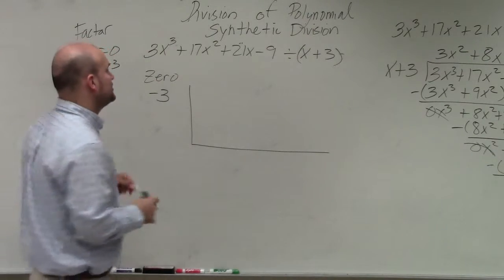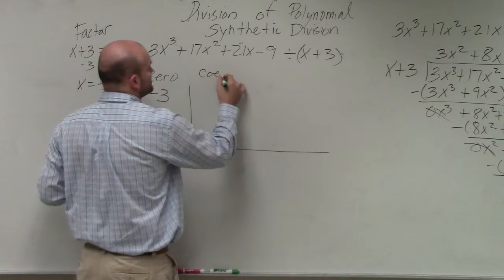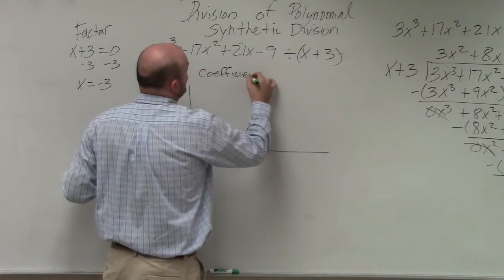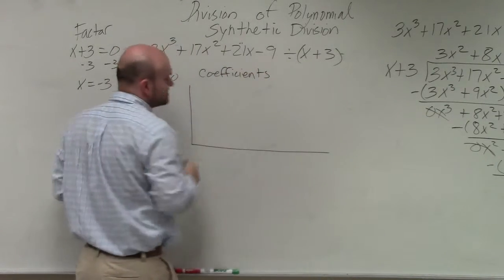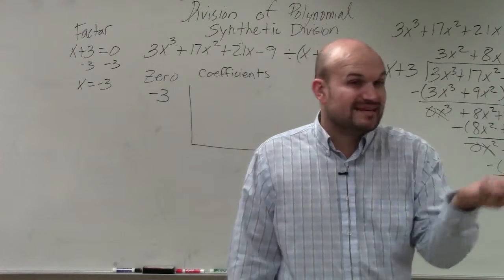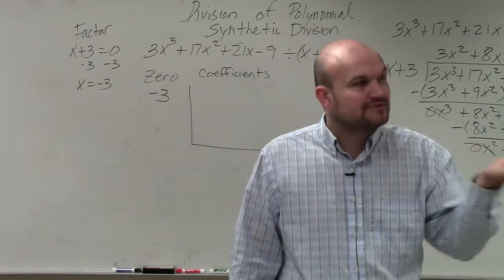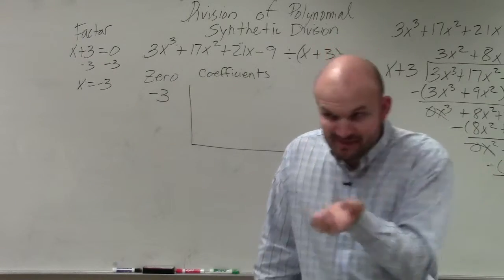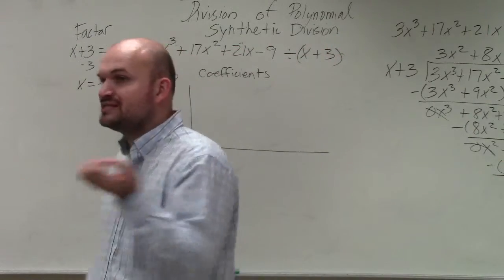Then up top, what you're going to do is take the coefficients. Now it's really important that you not only have your polynomials in standard form. But if you're missing a term, you have to include zero. So if you're missing a term, you have to put a zero there.